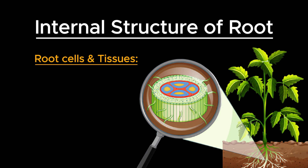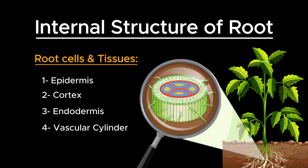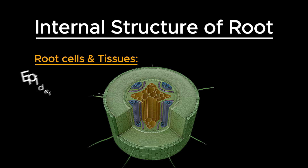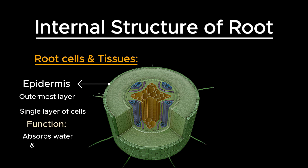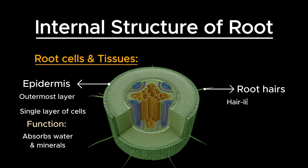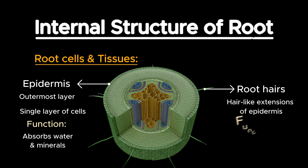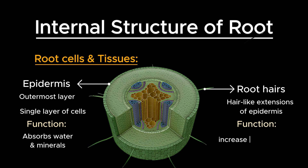Roots contain specific types of cells that form part of the primary regions and have specialized functions. The first one is the epidermis. The epidermis is the outermost layer of cells in the root. It absorbs water and minerals from the soil. Root hairs, which are extensions of epidermal cells, significantly increase the surface area for absorption.